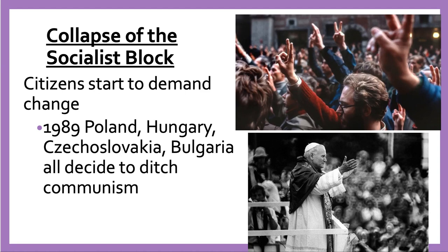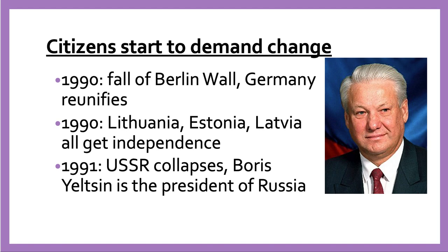With glasnost, people started to demand change, which opened and accelerated more change. Poland, Hungary, Czechoslovakia, and Bulgaria all ditched communism in 1989. Romania tried to resist but their leader was overthrown and executed — communism ended there violently. In 1990, the Berlin Wall fell and Germany was reunified for the first time since 1945. That same year, Lithuania, Estonia, and Latvia all gained independence. In 1991, we have the official end of the Soviet Union, and Boris Yeltsin was elected president of the Republic of Russia.